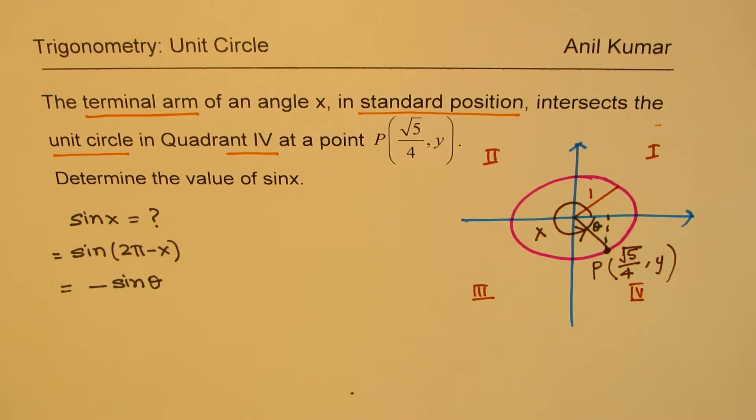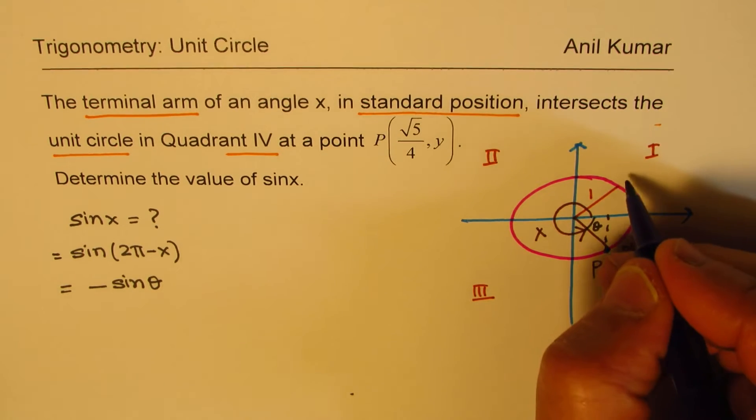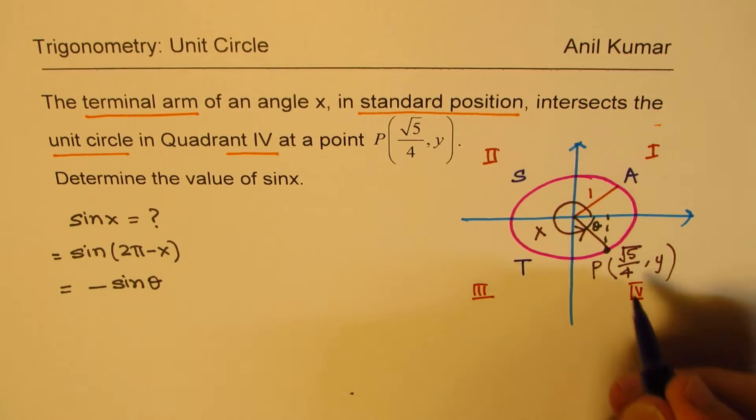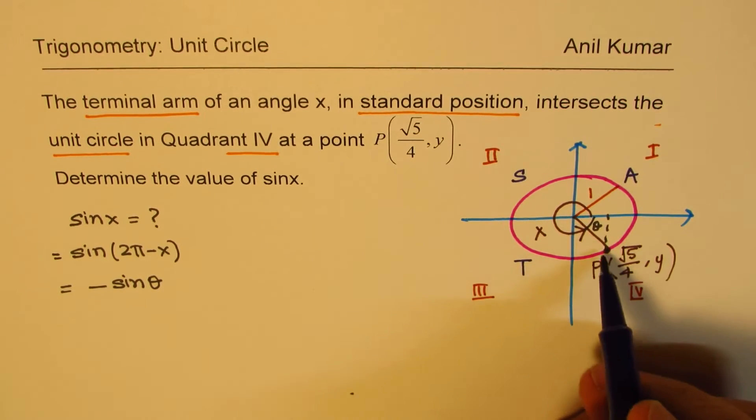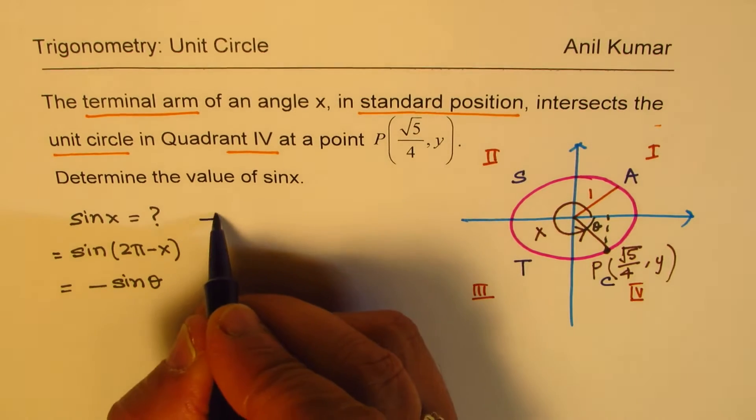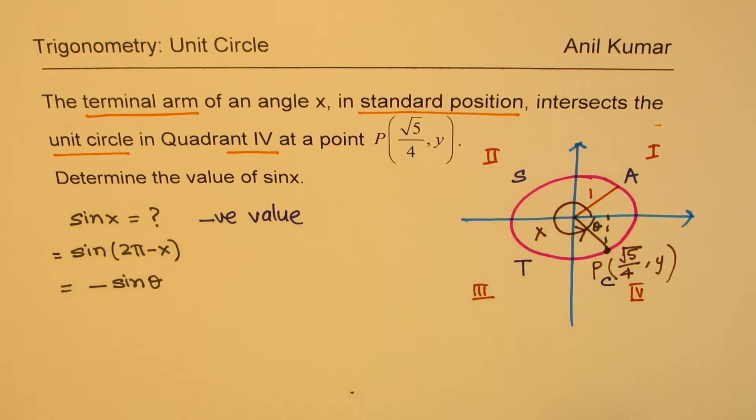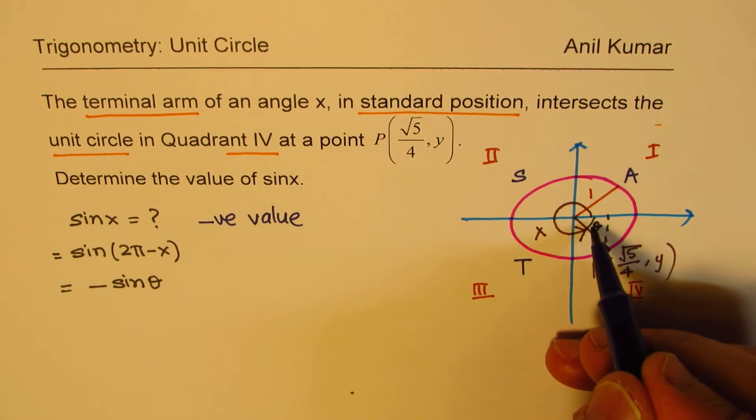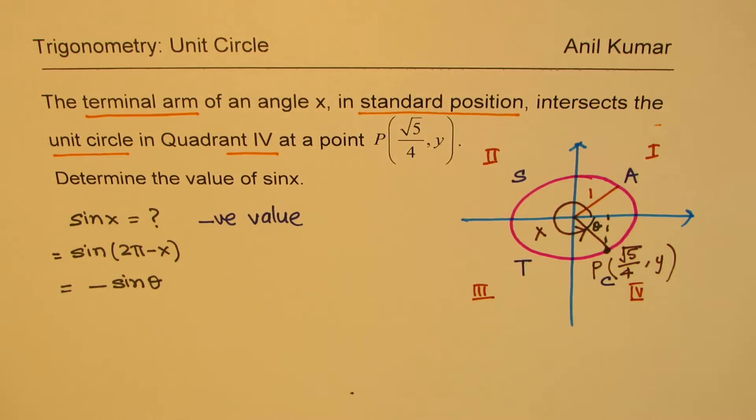Even otherwise, we are in quadrant 4. You know the rule, the CAST rule. All are positive here. Sin is positive in quadrant 2, tan in 3 and cosine in 4. So here we are expecting a negative value. One part: negative value. So I am putting that negative sign, and that is my angle θ for us now. So I have written this as minus sin θ.